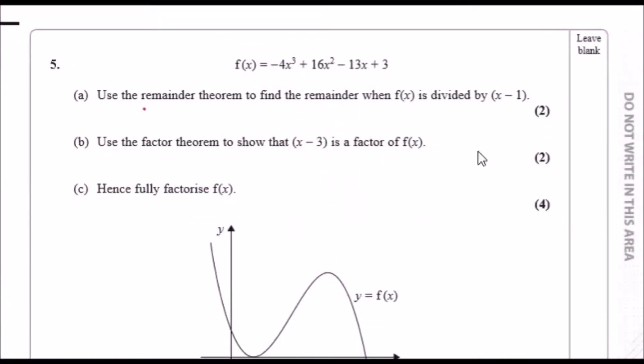Alright guys, here we go, number five. We're given a negative cubic function, and part (a) states that we need to use the remainder theorem, i.e., just plug in a value for x and find a remainder when f(x) is divided by x minus one. When this states x minus one, this implies that the x value itself, when you set the equation to zero, would be positive one.